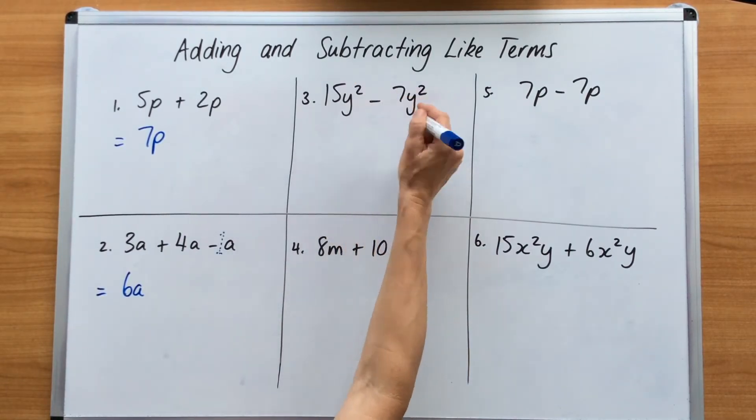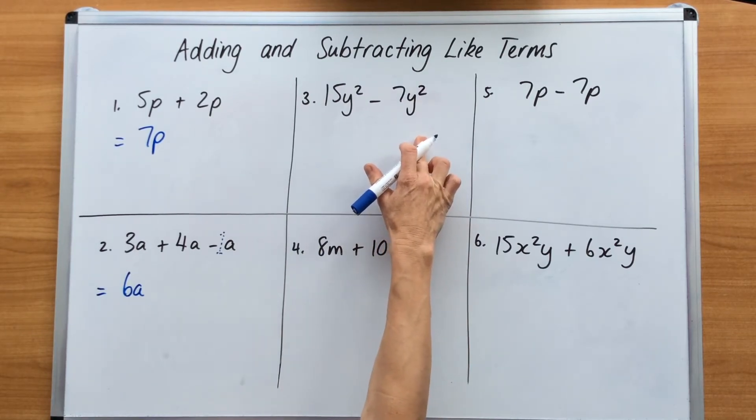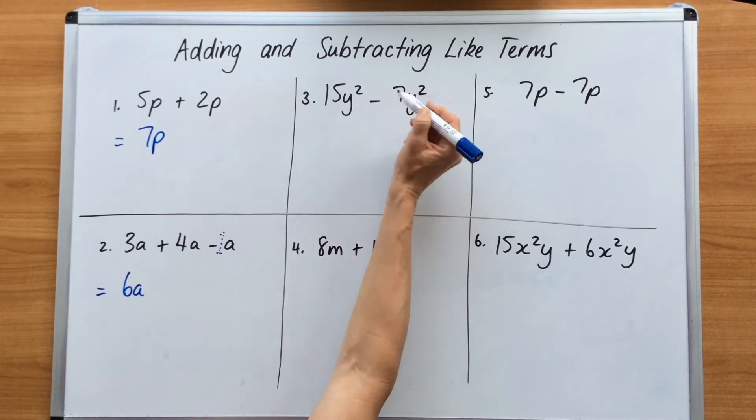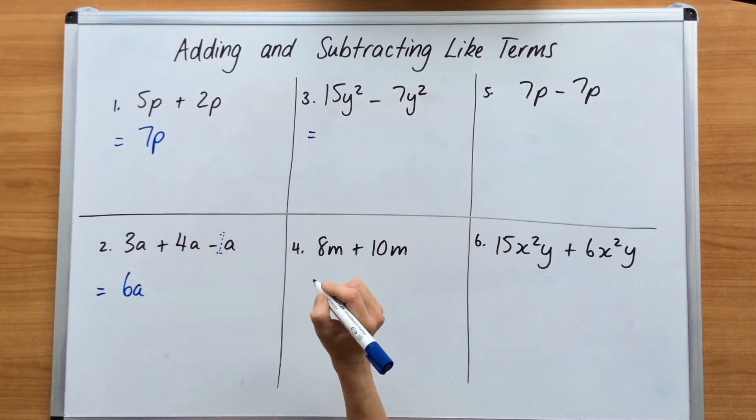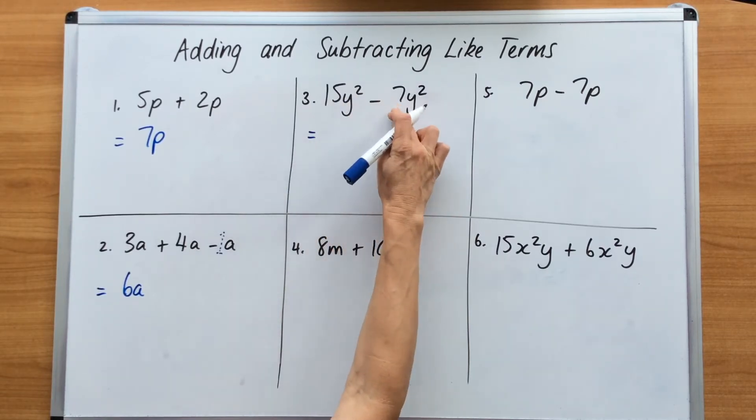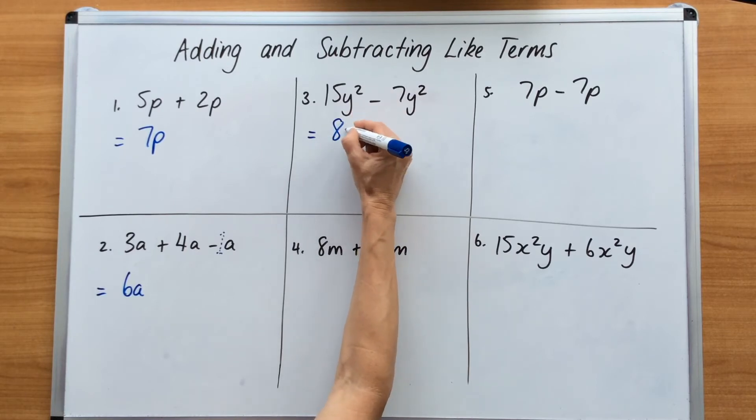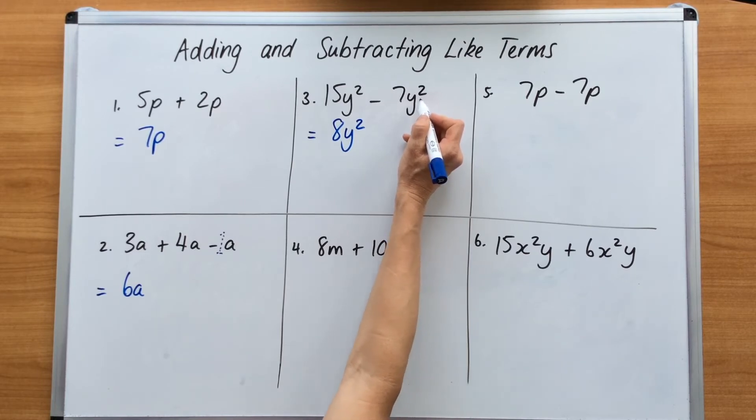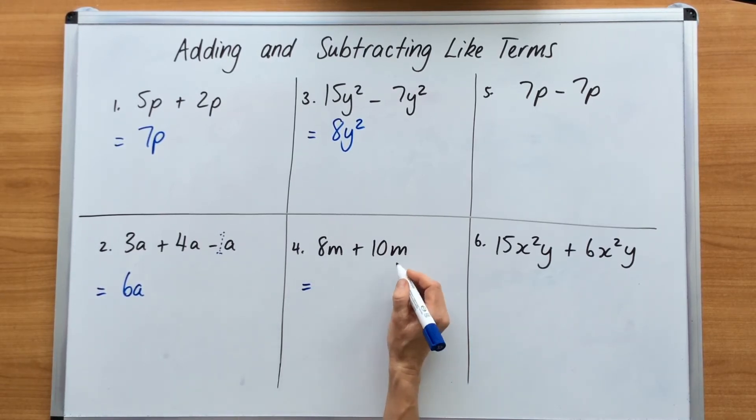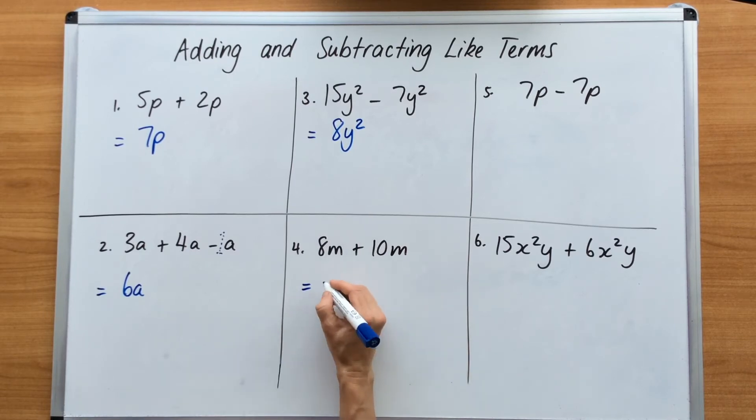This one here, we're adding the square numbers, the powers. So don't be fooled or worried about that because the Y owns that power. So they are like terms. So we write the equal sign, and all we have to worry about is the numbers. So 15 minus 7 equals 8, and we go Y squared. Nothing happens or changes to those powers on the Y. 8M plus 10M. This is another simple one. It's like saying 8 motor cars plus 10 motor cars equals 18 motor cars, but that's 18M.